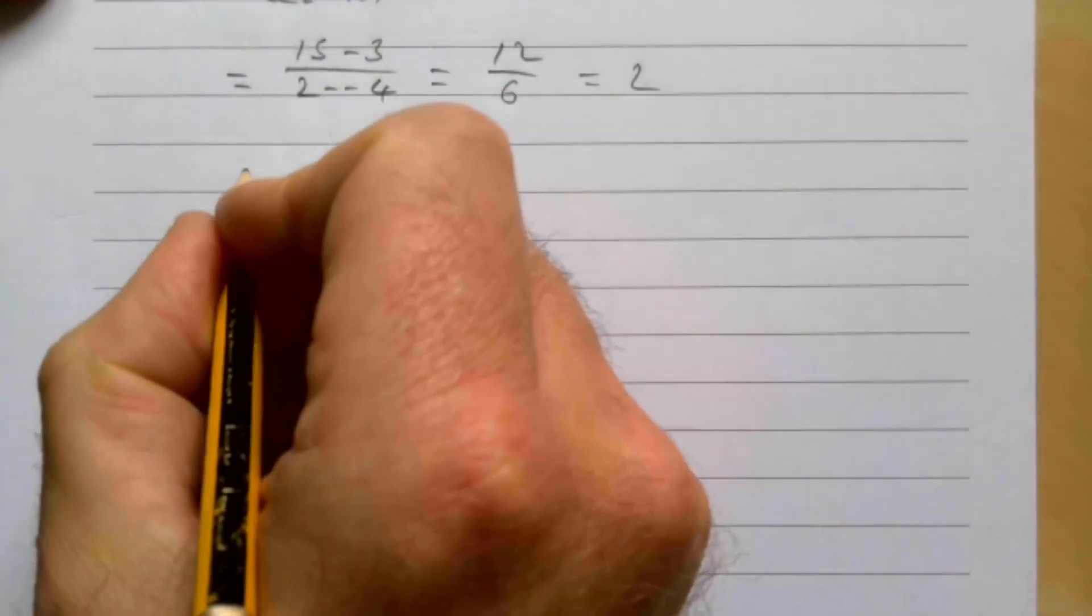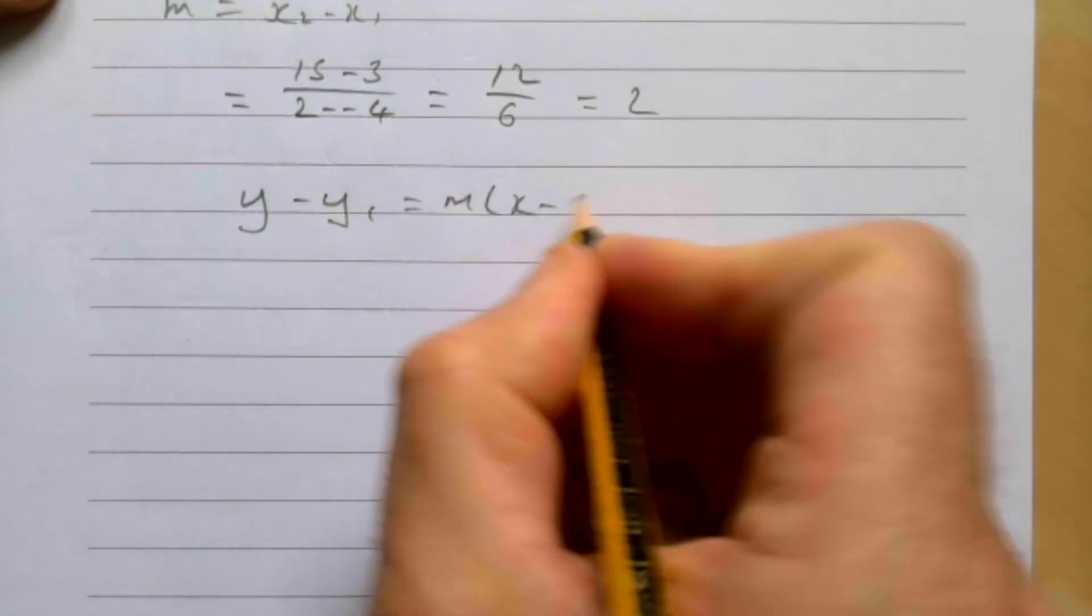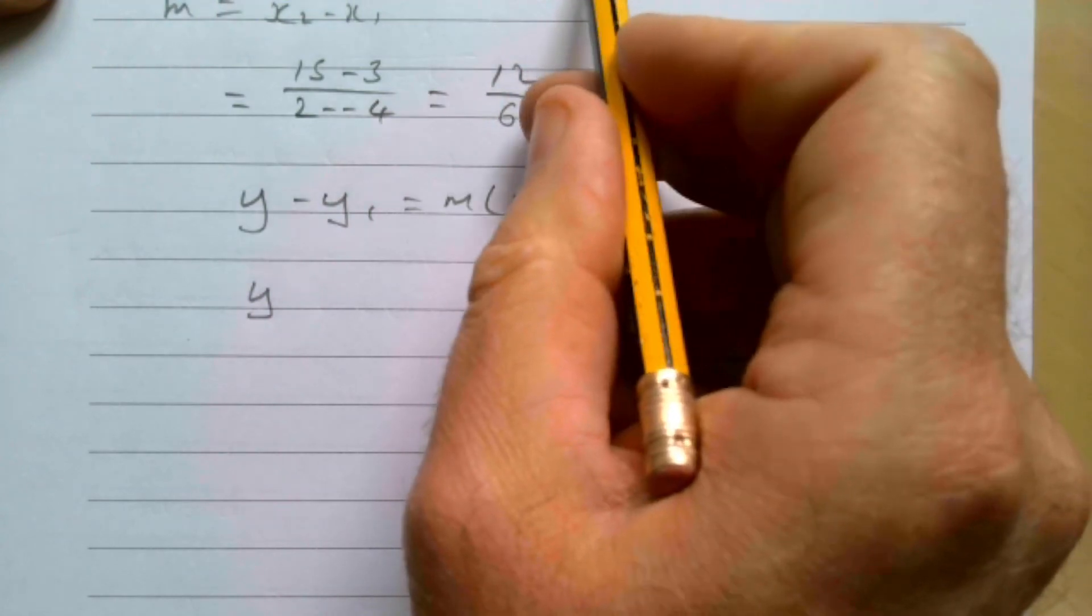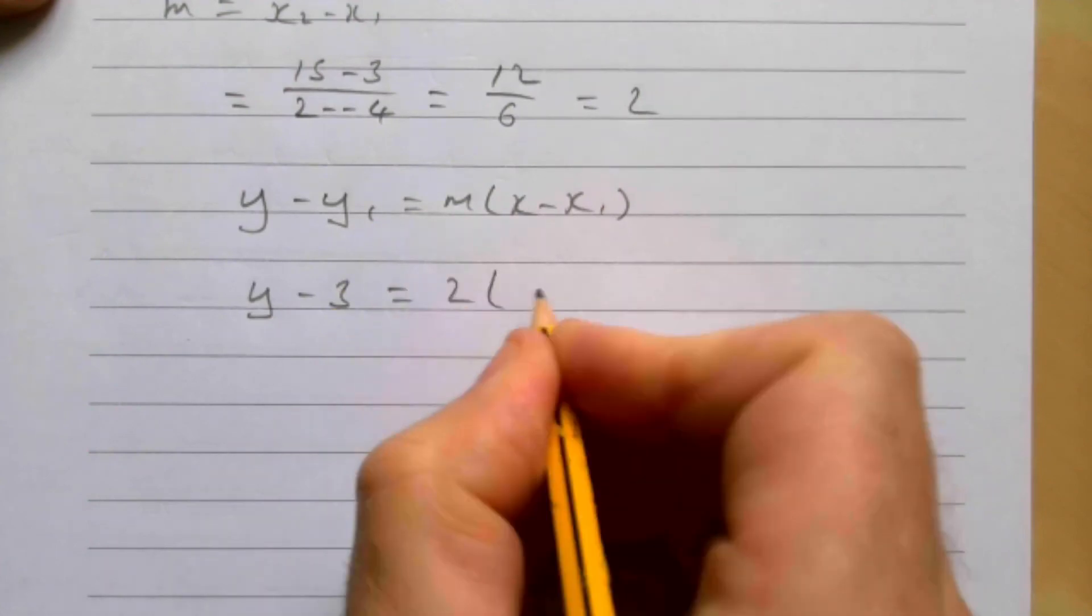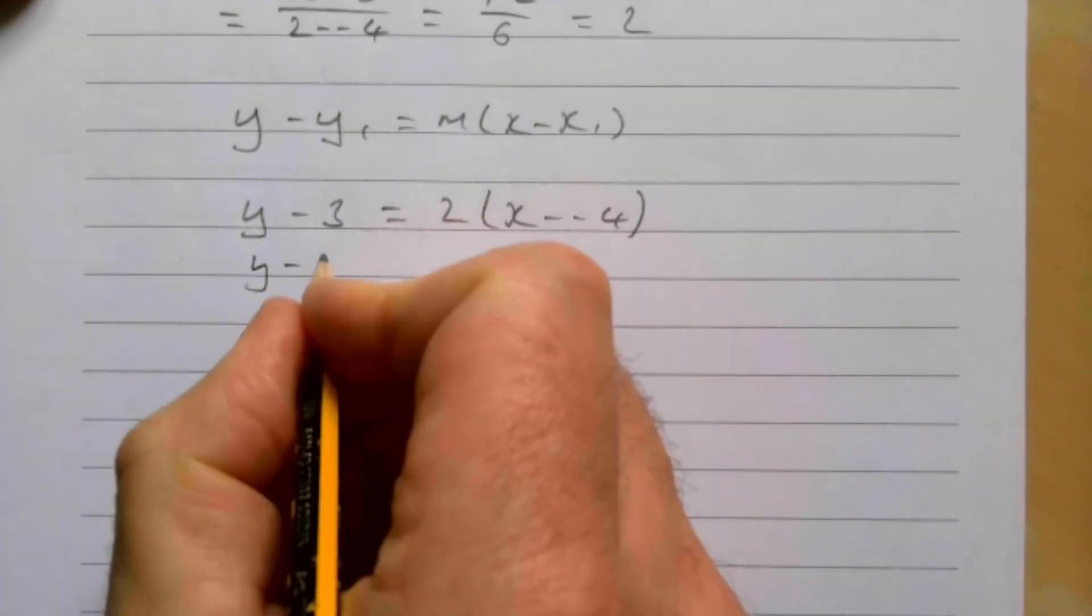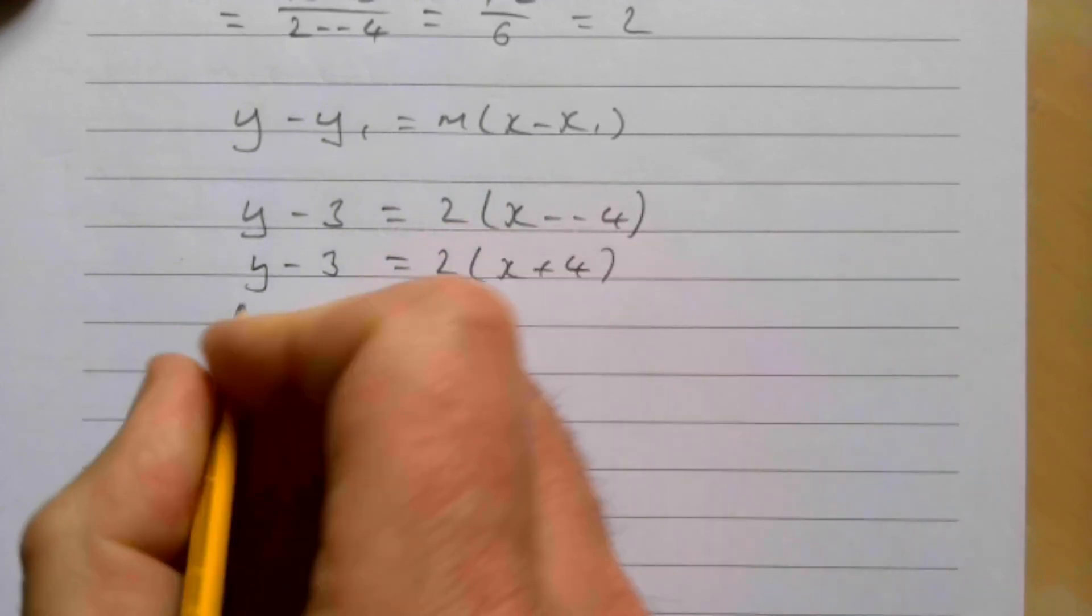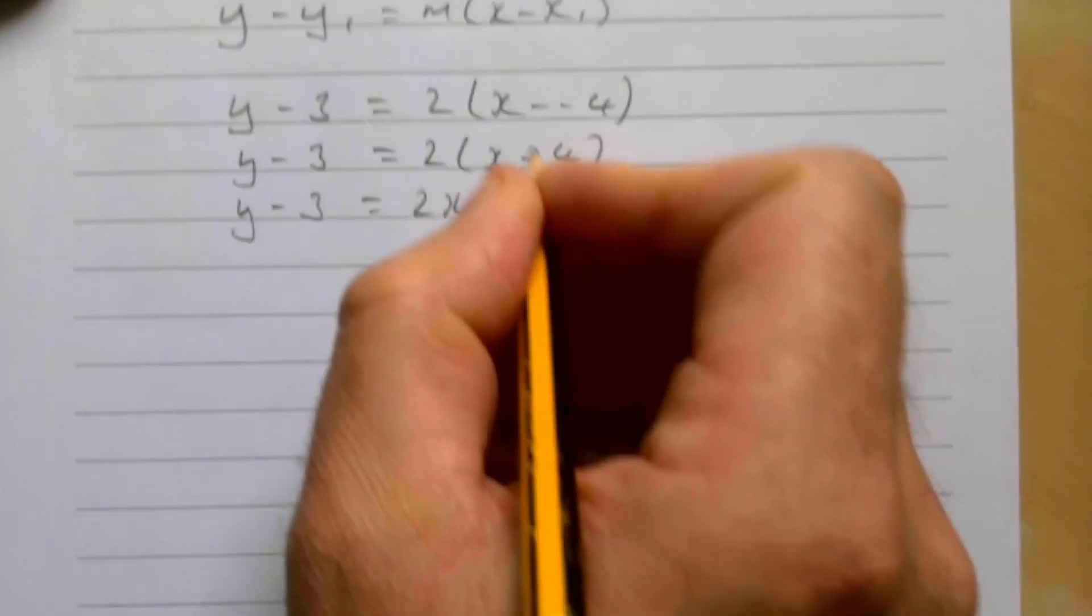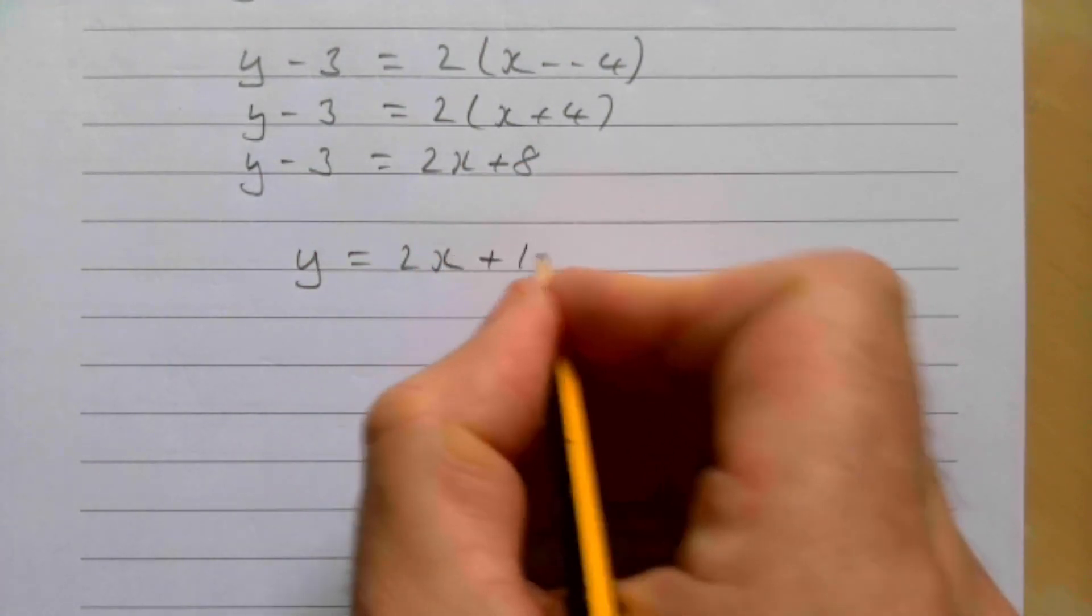So substituting then into y - y1 = m(x - x1). Just pick one of the two points, either is good. I'm just going to pick the first one here. So we know the y coordinate here then is 3. So it's y - 3 = 2(x - (-4)). y - 3 = 2(x + 4). y - 3 = 2x + 8. And rearranging then gives us y = 2x + 11.